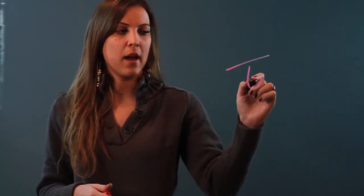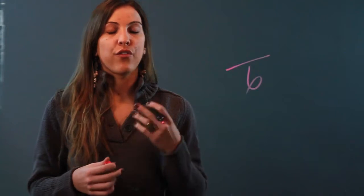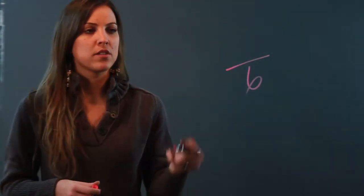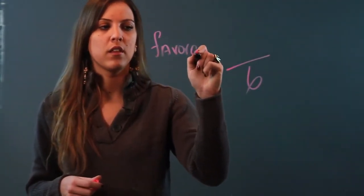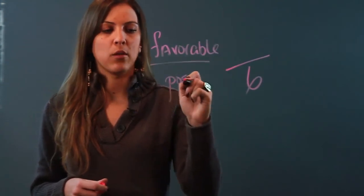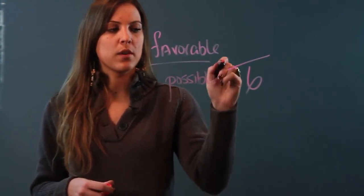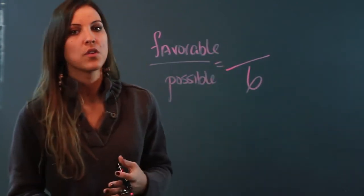So, if you have a 6-sided number cube, that means there are 6 possible outcomes, and our possible outcomes always go in our denominator. So I'm going to go ahead and write 6 in my denominator. The favorable outcomes go in the numerator — so we're doing favorable outcomes over possible outcomes. So 6 is my possibility, and favorable means the ones that I want to occur.